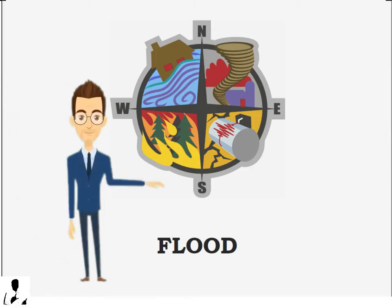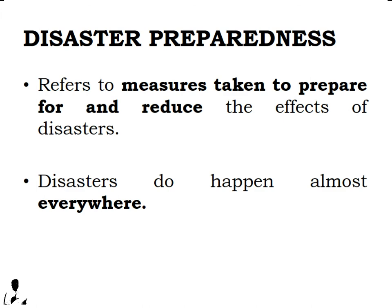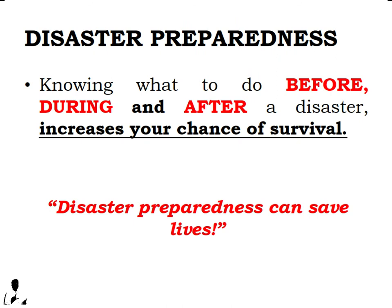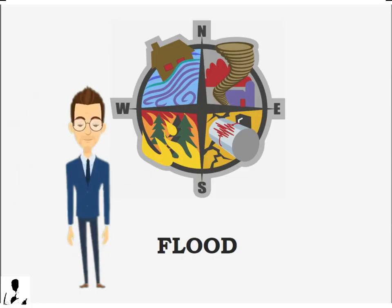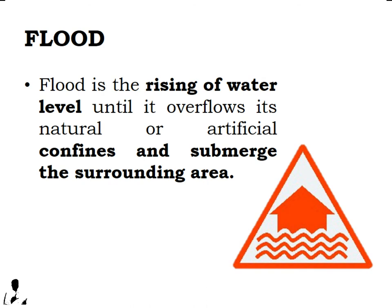Disaster preparedness refers to measures taken to prepare for and reduce the effects of disasters. Because disasters happen almost everywhere, knowing what to do before, during, and after a disaster increases your chance of survival. Always remember that disaster preparedness can save lives. Flood is the rising of water level until it overflows its natural or artificial confines and submerges the surrounding area.